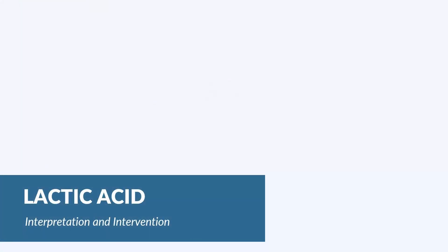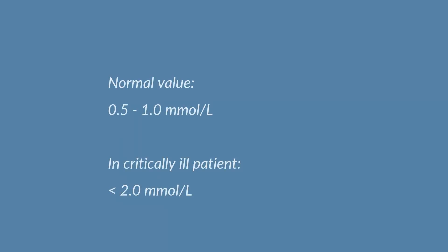The next lab value we're going to talk about is lactic acid, also referred to as lactate. I've mentioned it previously in the metabolic acidosis lesson, but I want to provide a little more detail and clarity as to what this lab value really means. Looking at normal values: in a perfectly healthy patient, we expect their lactic acid level to be less than 1. In a critically ill patient, we have more leeway — as long as they're less than 2, we consider that normal.